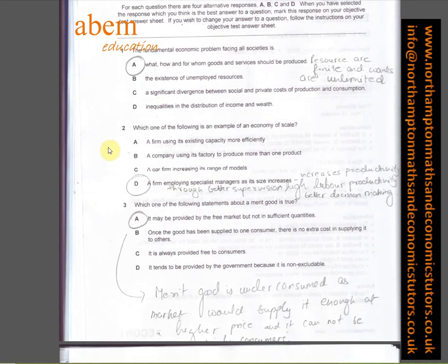For question number two, D is the answer because economies of scale increase productivity. So better supervision will result in higher labor productivity and better decision making. That's why in bigger organizations we have specialist managers.